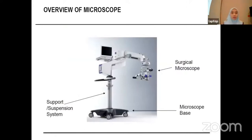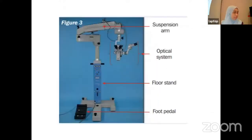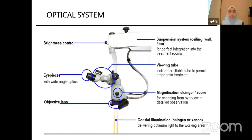This is the overview of the microscope. You can see the surgical microscope body, the microscope base, and also the support and suspension system. Looking at the optical system components: we have the button for brightness control, the suspension system — either ceiling, wall, or floor — for perfect integration into the treatment room. We also have the viewing tube, either inclined or tiltable, to permit ergonomic treatment positioning, the magnification changer or zoom, the eyepiece (IP) lens, the objective lens, and the coaxial illumination.